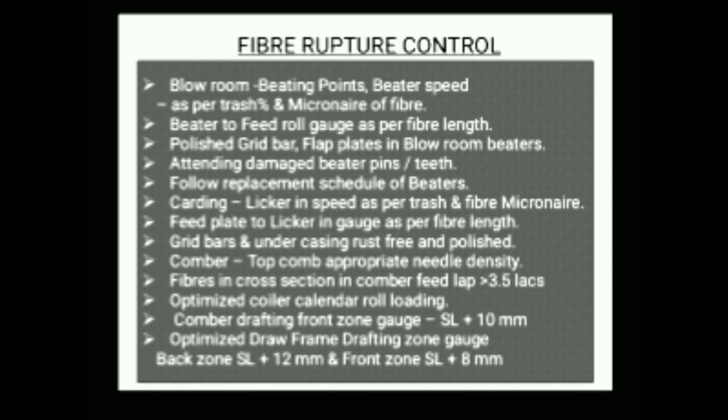In carding: lickerin speed should be as per trash percentage and fiber micronaire in mixing. Feed plate to lickerin gauge should be as per fiber length. Grid bars and under casing should be rust-free and polished. In comber: top comb should be used with appropriate needle density. Fiber in cross section of comber feed lap should be above 3.5 lakhs. Optimized coiler calendar roll loading will control fiber rupture. Comber drafting front roll gauge suggestion is 2.5 span length plus 10 mm; for drawframe back zone: 2.5% span length plus 12 mm, and front zone: 2.5% span length plus 8 mm.